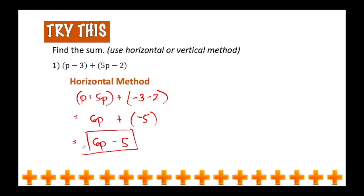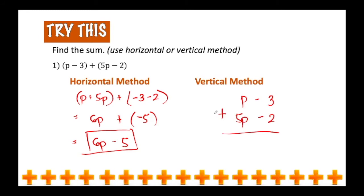In the vertical method, you have to make sure that like terms are aligned. So copy the first given quantity — we have t minus 3. Then we're going to align 5t with t, because they are like terms, and negative 2 with negative 3. In this method, you can do it from left to right or right to left. It doesn't matter, as long as you follow the rule in terms of the sign.